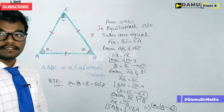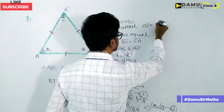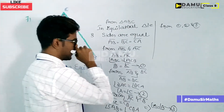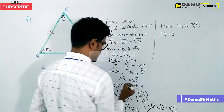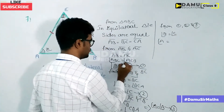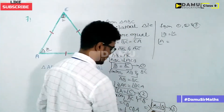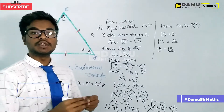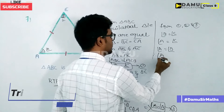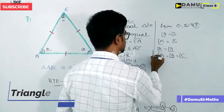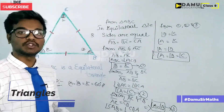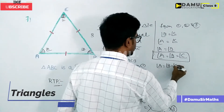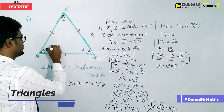From all these equations — equation 1, 2, and 3 — all the angles are equal to each other. From equation 1: angle B equals angle C. From equation 2: angle A equals angle C. From equation 3: angle A equals angle B. Therefore, angle A equal to angle B equal to angle C. Let us take all these angles equal to X degrees.